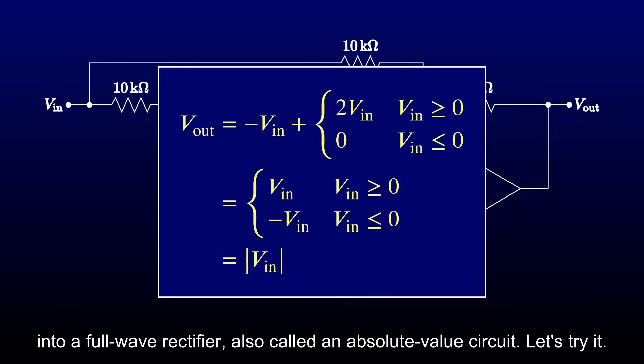At the cost of two more equal valued resistors, we've made our half-wave rectifier into a full-wave rectifier, also called an absolute value circuit. Let's try it.